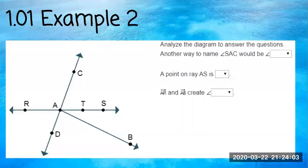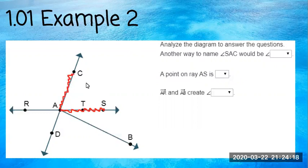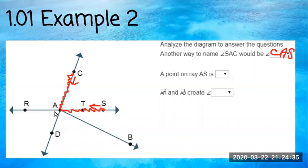For number two, analyze the diagram to answer the questions. Another way to name angle SAC: you're just going to go the other direction, starting at C, going to A, then to S. So angle CAS equals angle SAC. A point on ray AS — ray AS starts at A and goes to S, so a point on there would be point T.